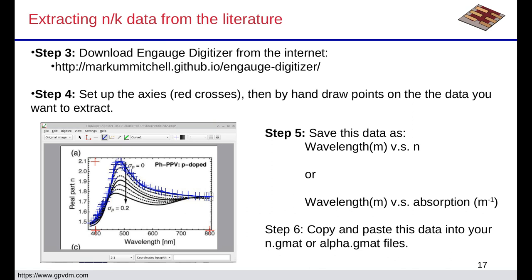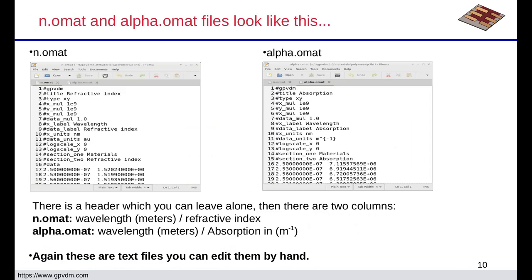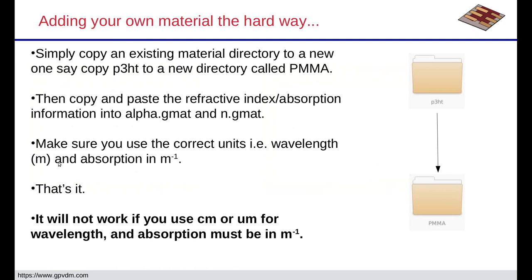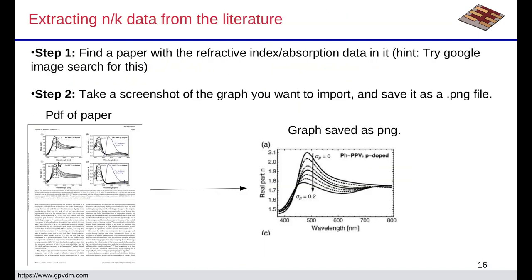One thing to watch out for: make sure there are no commas or any weird formatting in the data files — it's wavelength, then the number, then a new line. No commas, nothing weird. Also note that on some computers in some languages the decimal point may be a comma rather than a full stop, and GPVDM may not handle the comma very well, so be aware of that.